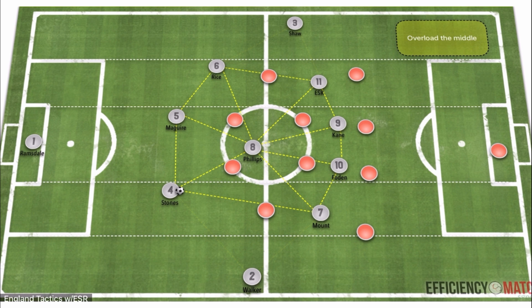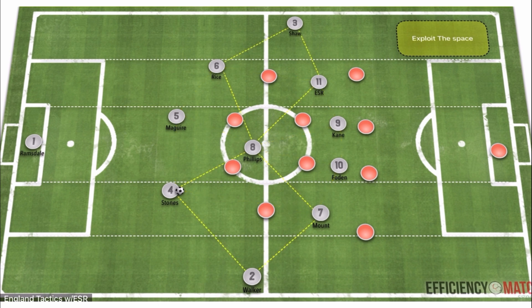The concepts include overloading the middle corridors to secure transition and use players like Emil Smith Rowe, Phil Foden, and Mason Mount between the lines with their quality on the ball, while Kyle Walker and Luke Shaw hold the width. This could then exploit the vacant space left by the massive overload in the offensive positions between the lines and in the central corridors.